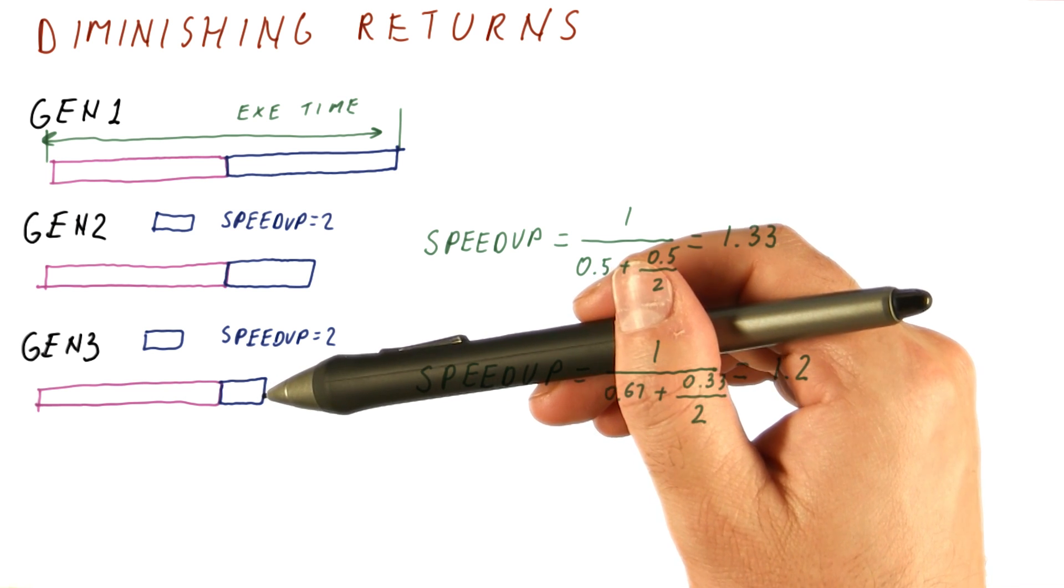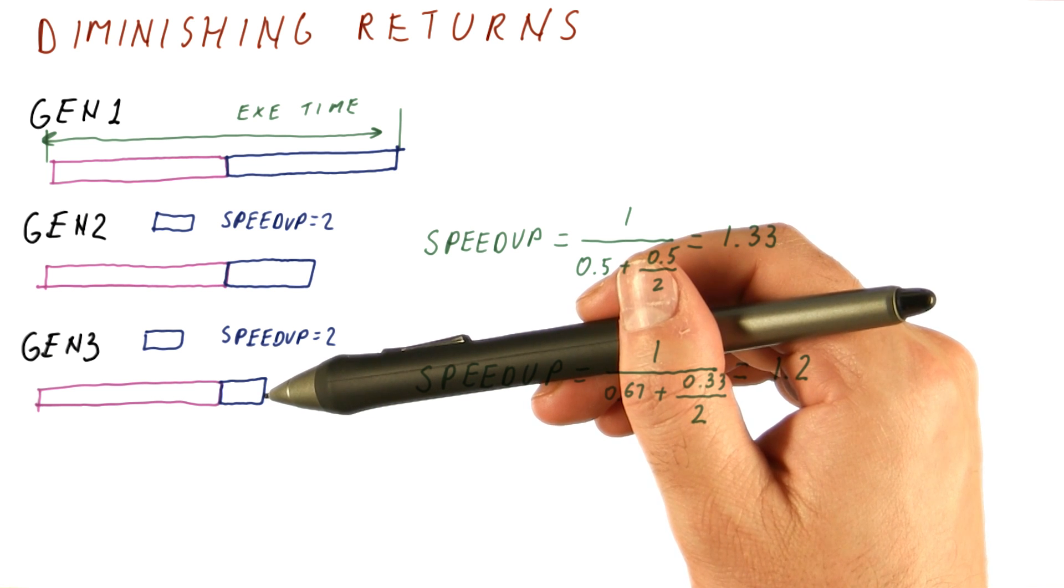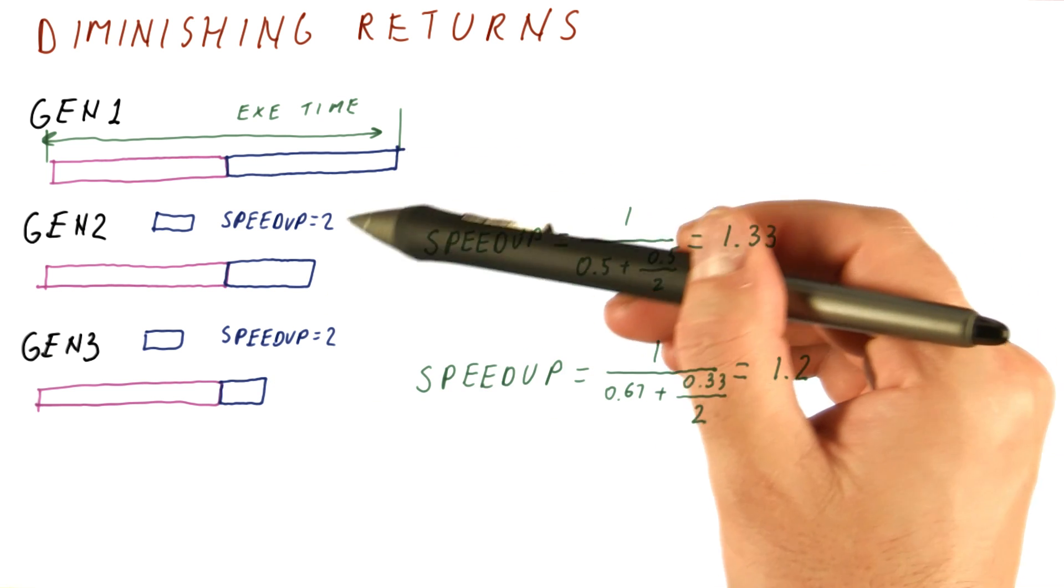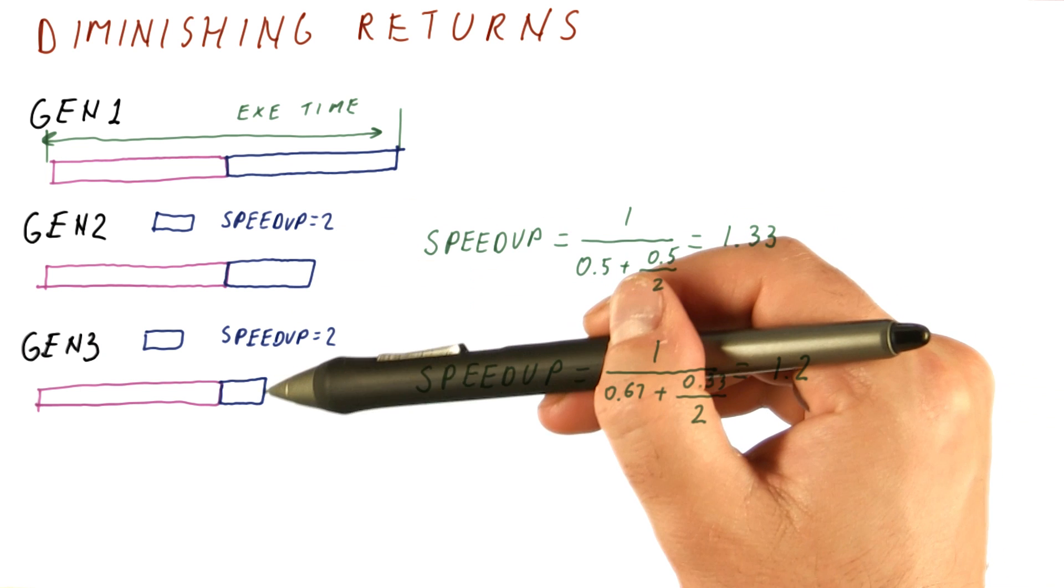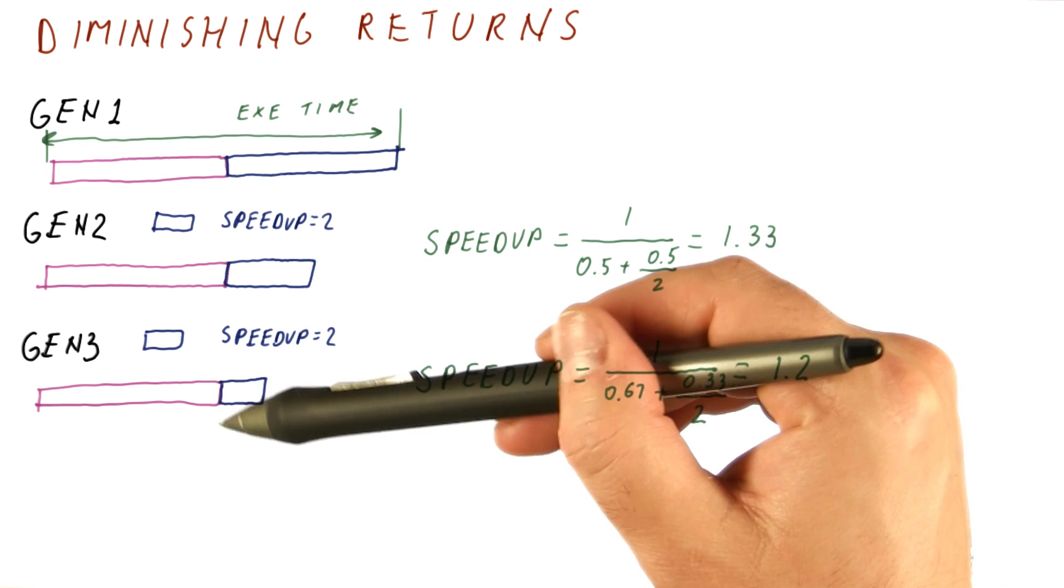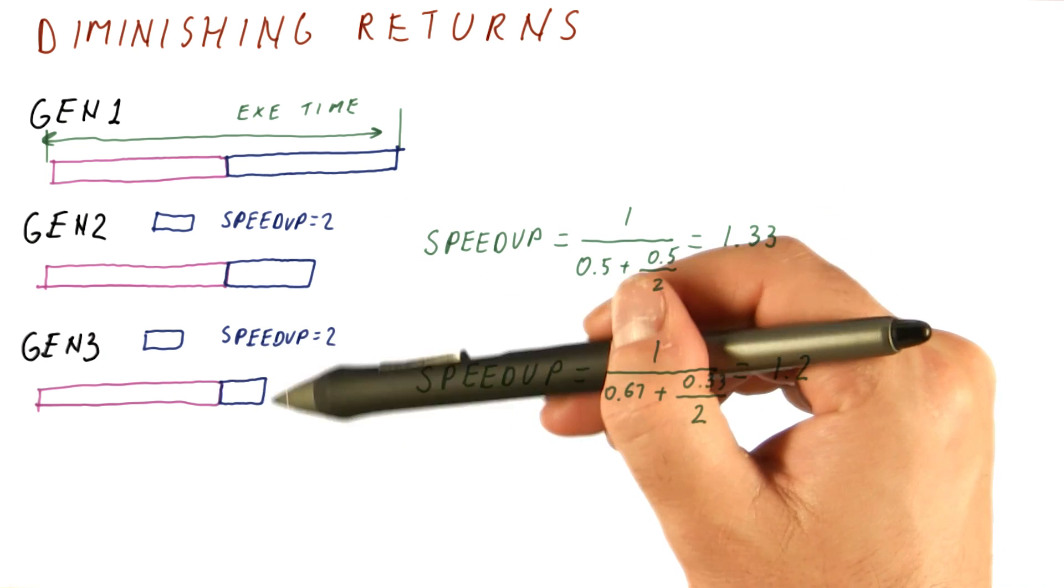This is sort of a lesson to computer architects to not go overboard improving the same thing, because the things that have already been improved are now a smaller percentage of the new execution time.